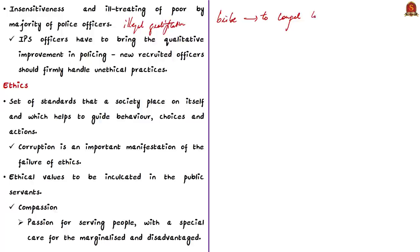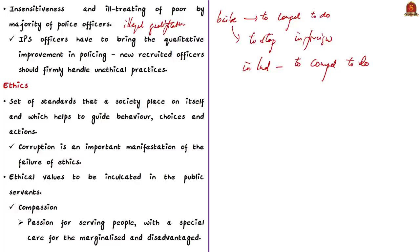This unfortunate situation is further aggravated by the fact that officials at lower levels of bureaucracy are also insensitive or demand illegal gratification to provide a service. In India, bribe has to be offered to compel the public servant to do something which the law prescribes them to do. In foreign countries, bribes are offered to stop a public servant from doing something — but in India, we have to pay the public servant to do what they are legally bound to do. For example, we know about the Sathankulam custodial deaths. The colonial legacy of police administration is attributed to police brutality and ill-treatment of the poor.